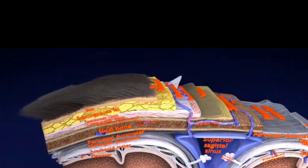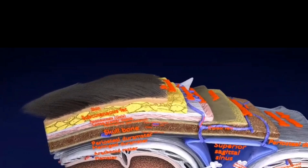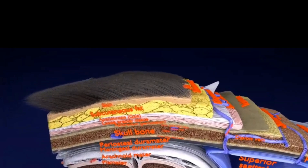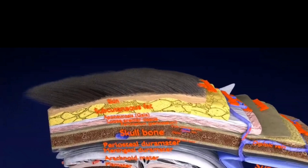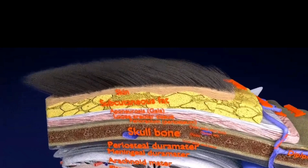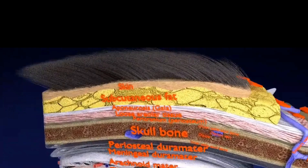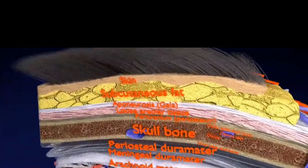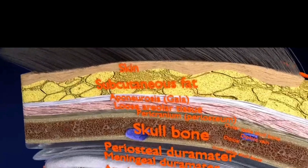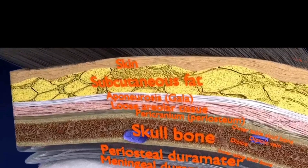The scalp has further layers, best remembered by the mnemonic SCALP: S for skin, C for connective tissue, A for aponeurosis, L for loose areolar connective tissue, and P for periosteum.